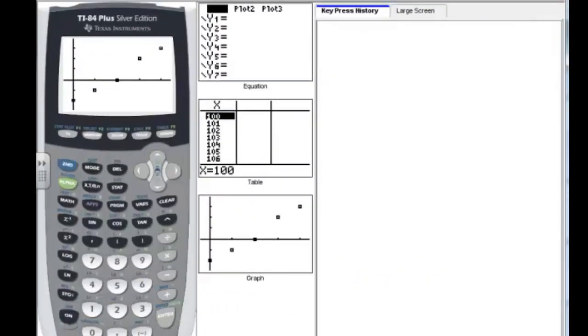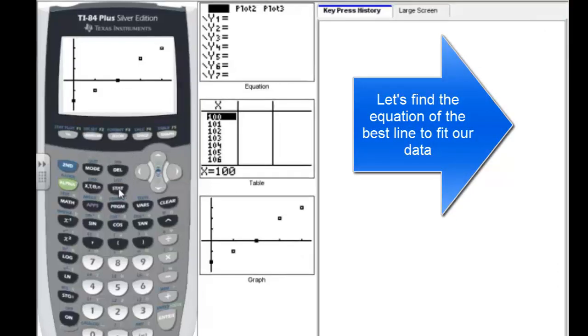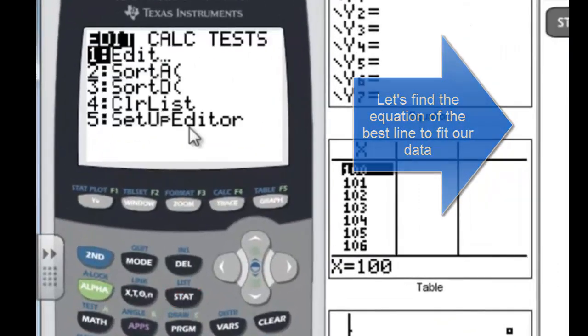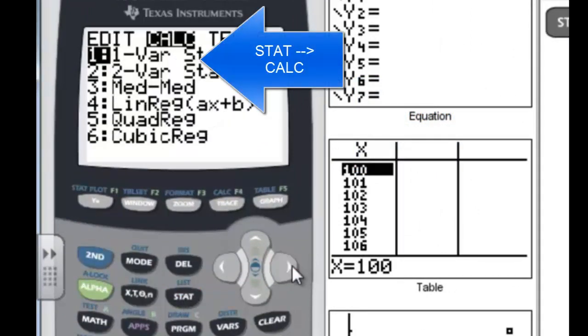Okay, clear our history again. And now we want to know what the equation of this line is, or the best equation. So we hit the stat key. And instead of editing this time, we want to go up here to calculate. So just arrow over to calculate.